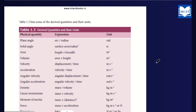How do we find derived units? For physical quantity plane angle, the formula is arc divided by radius. The plane angle unit is radian. Solid angle is surface area divided by radius squared — that unit is steradian (SR). These two are supplementary derived units.